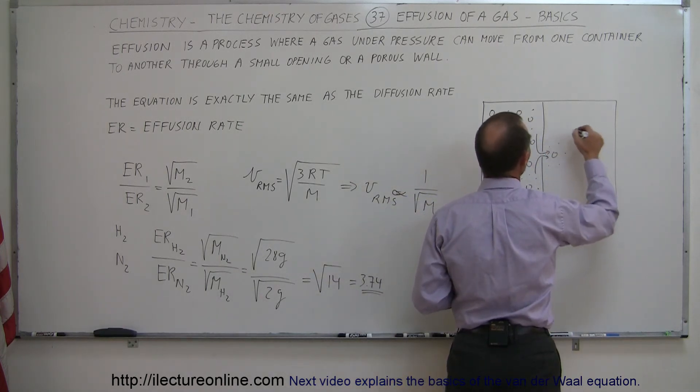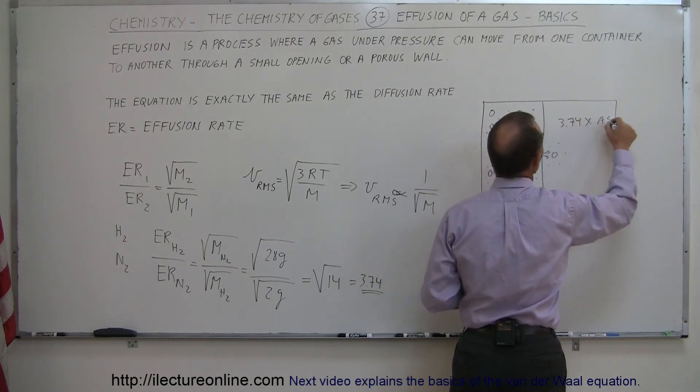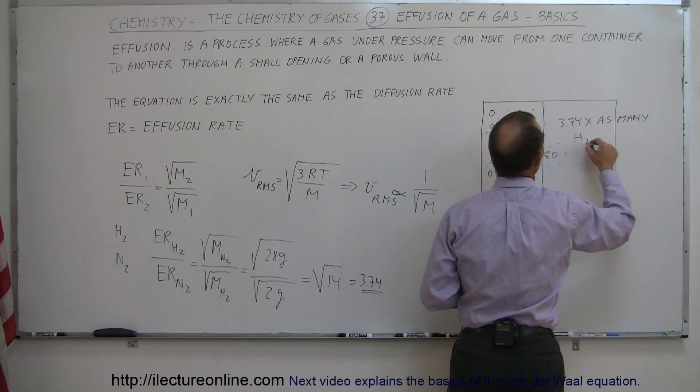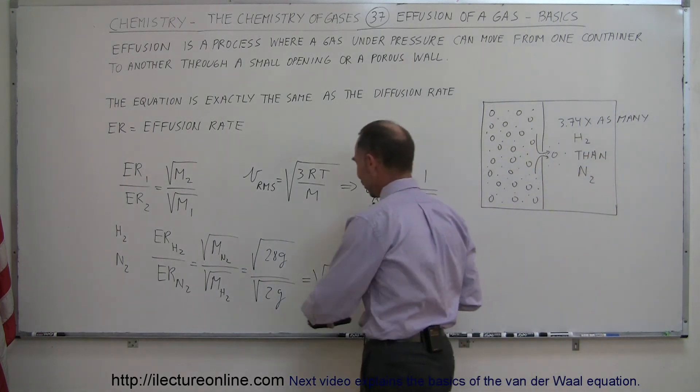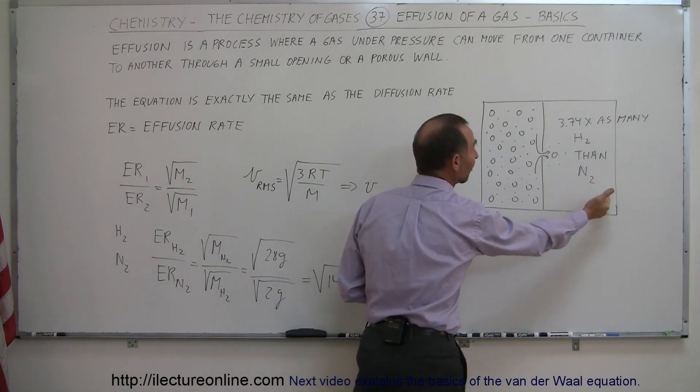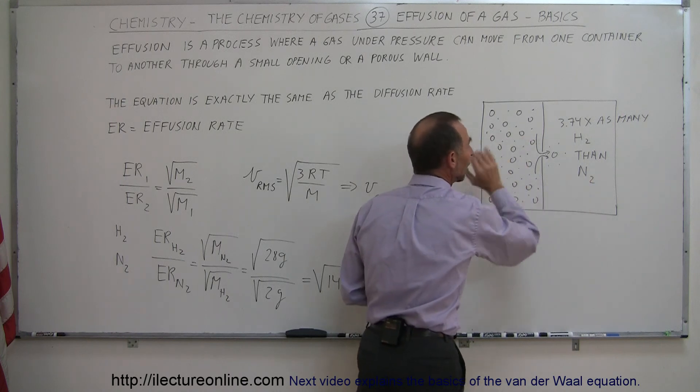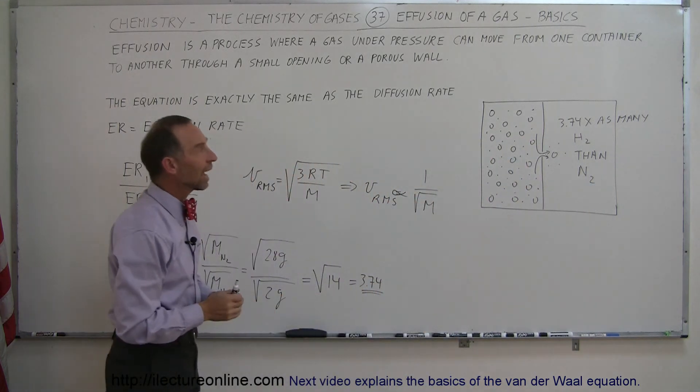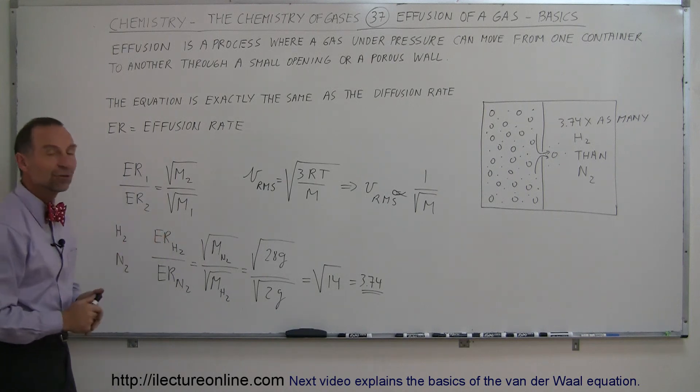So you'd have eventually 3.74 times as many hydrogen molecules than the nitrogen molecules. So if you go through this process and you want to then figure out what you have on the other side, you'll have almost 4 times as many of the hydrogen compared to nitrogen molecules as you did in the initial sample of the gas. And that's called effusion, and that's how we figure out the effusion rate.